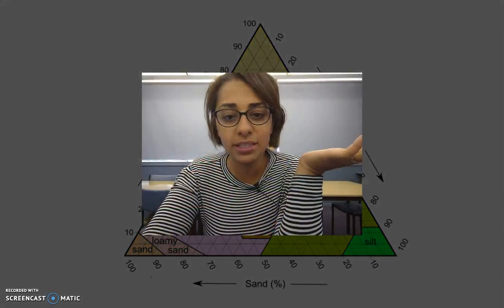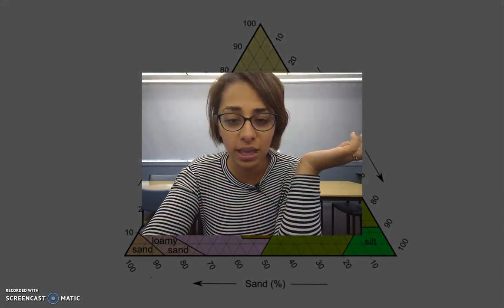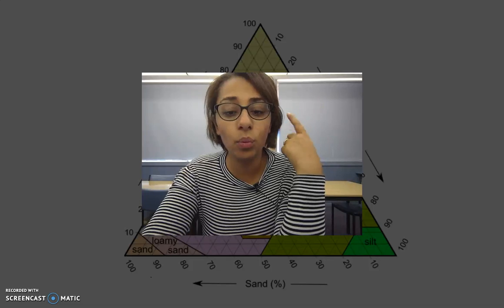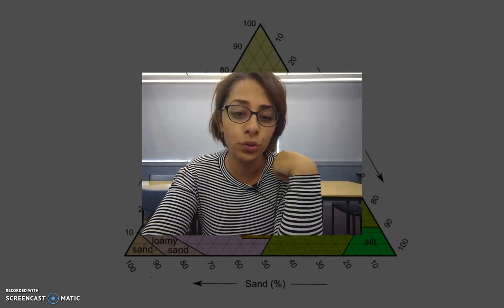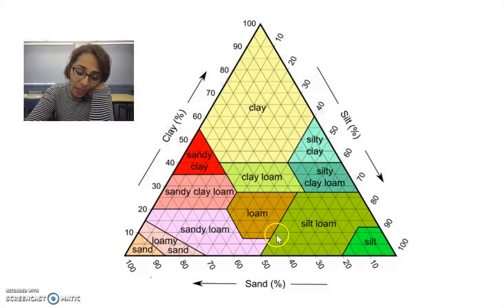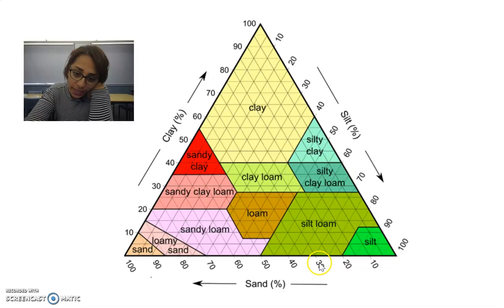So hopefully it's now making sense of how you actually read this triangle. I'm gonna give you one more example and then you're gonna have two questions to try yourself. Okay, so let's try if we've got 30% sand, then we've got 25% clay, so what's left over? 30 and 25 is 55, so it should be 45%, which is correct. So we've got a loam.